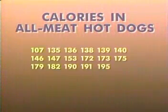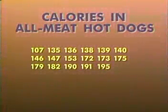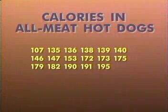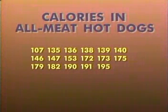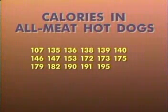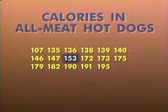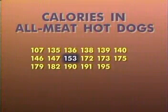Let's take a look at another distribution and break it into quartiles to be certain we understand how it all works. The calories of all-meat hot dogs — hot dogs with a variety of meats in them — were also measured. Using our recipe for finding the median, we find that since there are 17 observations, the median is the ninth value in the list. The median calorie level of all-meat hot dogs is 153. For the 20 beef hot dog brands we looked at earlier, the median was midway between two observations, but here the median falls right on one of the observations.